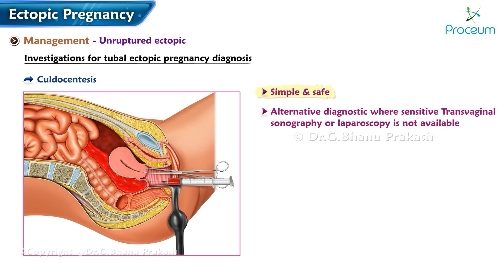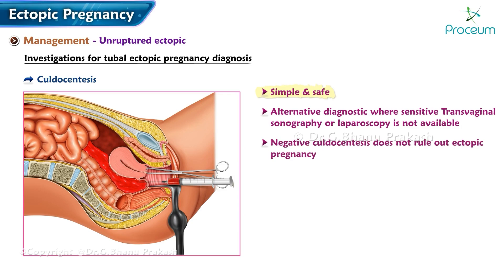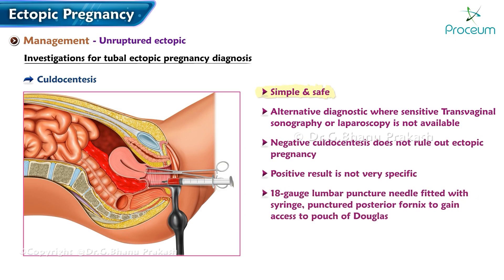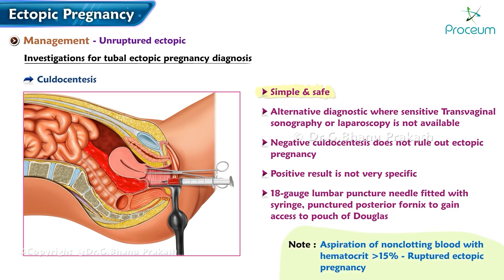Unfortunately, negative culdocentesis does not rule out ectopic pregnancy, nor is a positive result very specific. Through an 18-gauge lumbar puncture needle fitted with a syringe, the posterior fornix is punctured to gain access to the pouch of Douglas. Aspiration of non-clotting blood with a hematocrit greater than 15 percent signifies ruptured ectopic pregnancy.